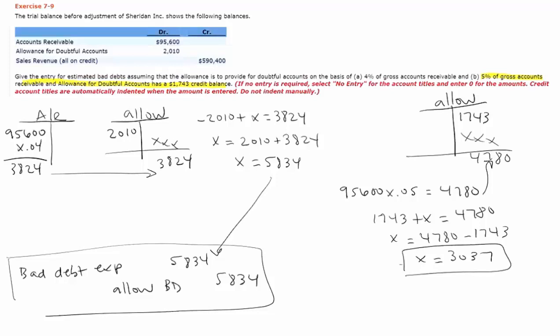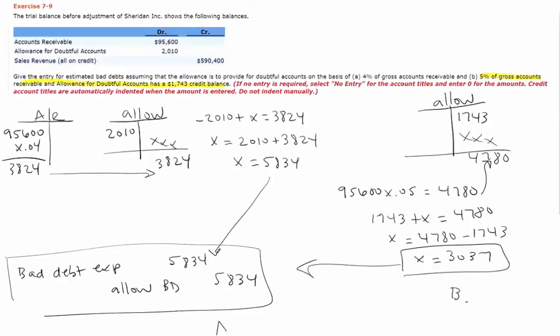So the journal entry is the same, it's just with part B that would be the number. So this is part B and this is part A.